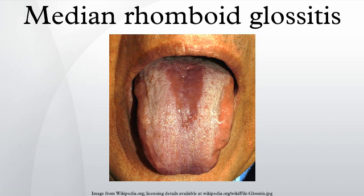Less typically, the lesion may be hyperplastic or lobulated and exophytic. There may be candidal lesions at other sites in the mouth, which may lead to a diagnosis of chronic multifocal oral candidiasis. Sometimes an approximating erythematous lesion is present on the palate, as the tongue touches the palate frequently — do not confuse it with kissing disease, infectious mononucleosis.